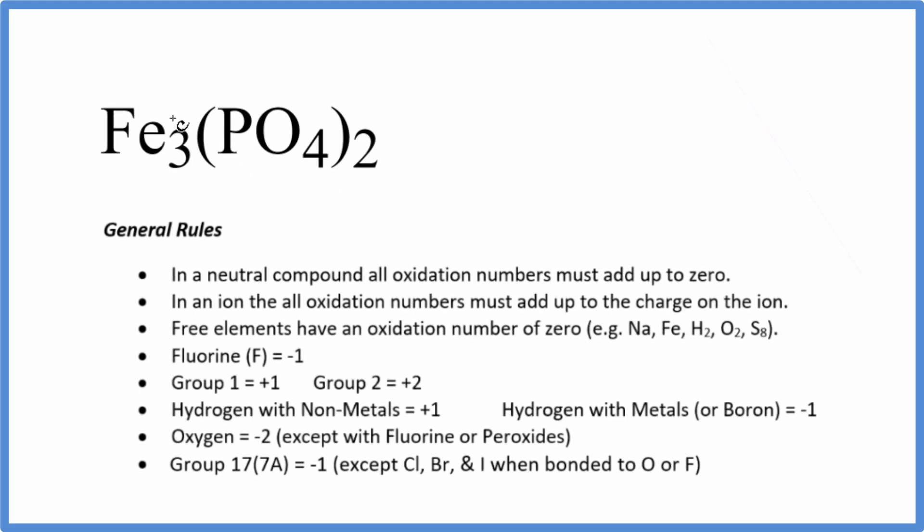In this video, we'll find the oxidation number for the iron in Fe₃(PO₄)₂. The first thing to notice, there's no negative or positive after the compound here. That's because it's a neutral compound, and all the oxidation numbers are going to add up to zero.